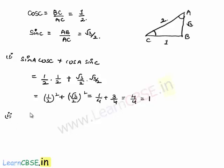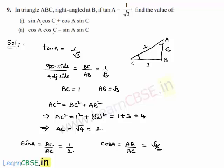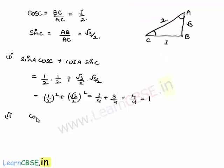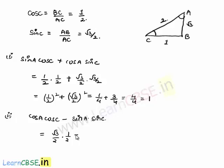Moving on to part (ii): cos A cos C minus sin A sin C equals (root 3/2)(1/2) minus (1/2)(root 3/2), which equals root 3 by 4 minus root 3 by 4, giving 0.